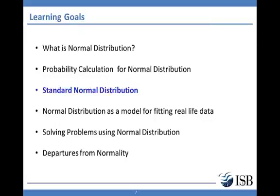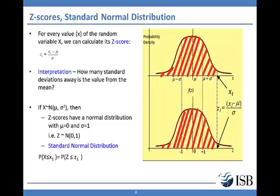We will come to one of the most important steps for doing any probability calculation for a normal distribution, which is the concept of standard normal distribution. So what is a standard normal distribution? The idea is really that of standardization — converting any given normal distribution into one that has a mean of zero and a standard deviation of one. For every value of the random variable, there is a corresponding value in the standard normal distribution, which we call the Z value or Z score.